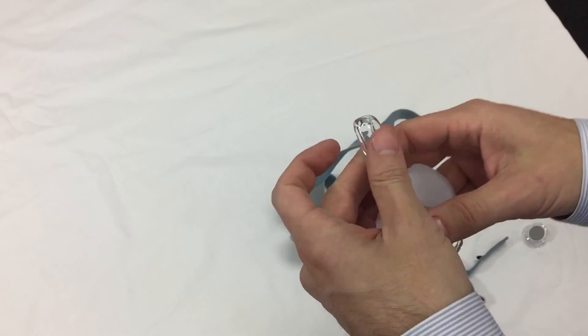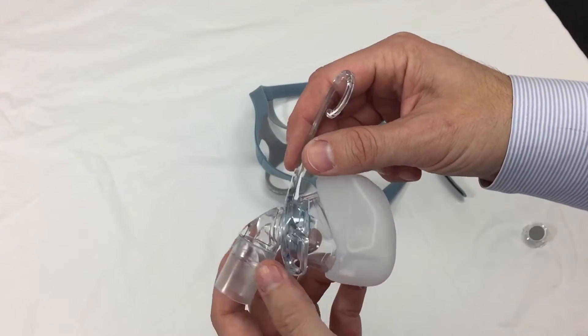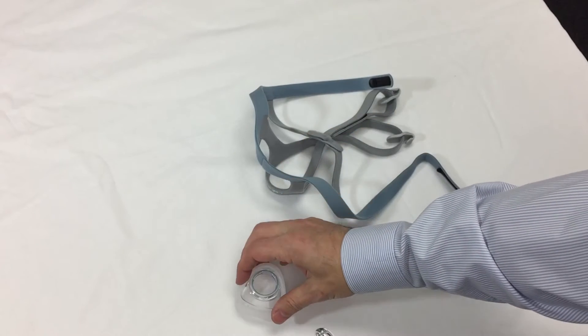So we'll take the headgear off for a second. So you can see there's very few parts to this mask. You have the headgear, the mask frame, the cushion, and the filter.